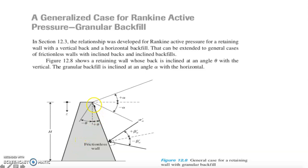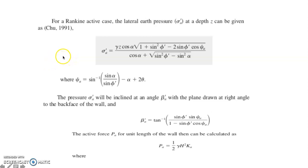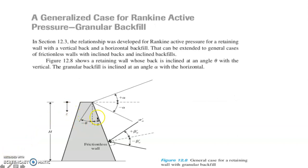For this general case, with an inclined backfill and an inclined back face of the retaining wall, the Rankine active lateral earth pressure at a certain depth is solved through this equation for sigma (psi). The angles alpha, phi, and psi are specified in the figure, showing the placement of each angle for the general case.